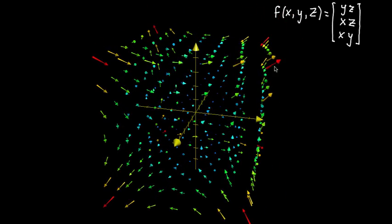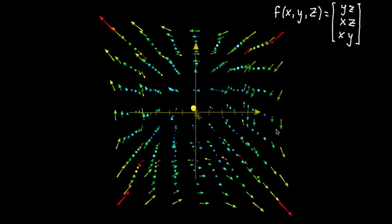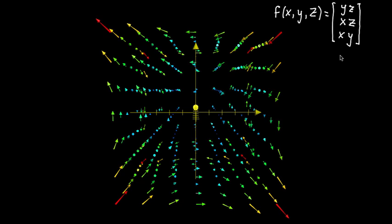So you see, some of the vectors are kind of pointing away from the origin. Some of them are pointing in towards the origin. So how can we understand this vector field in terms of the function itself?